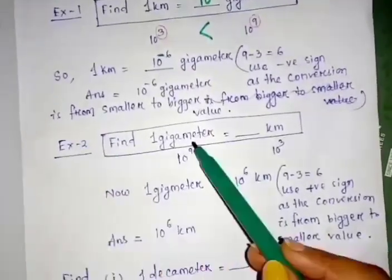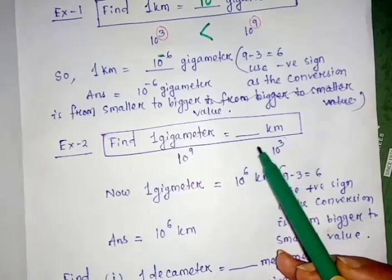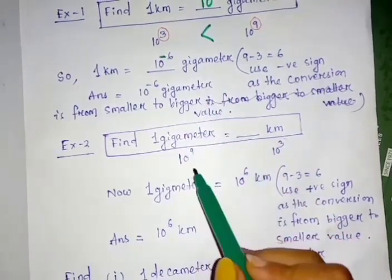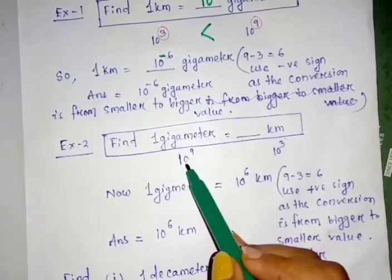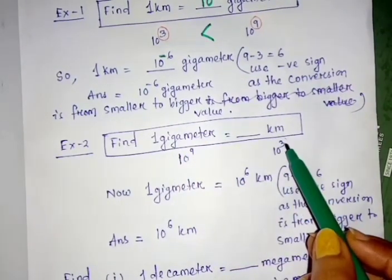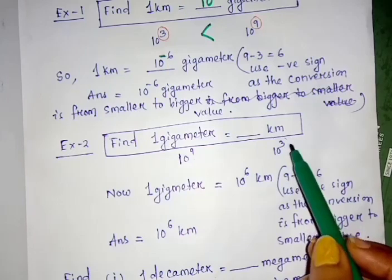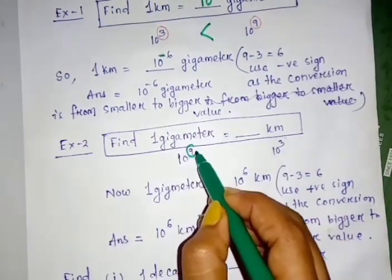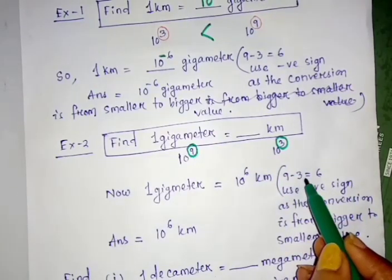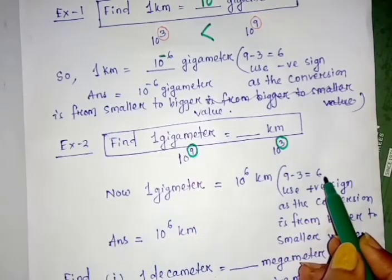Another example: 1 gigameter equals how much kilometer. As before, write down the values. 1 gigameter equals 10 to the power 9 meter and 1 kilometer equals 10 to the power 3 meter. Now check the powers, subtract like this: 9 minus 3, and the result is 6.